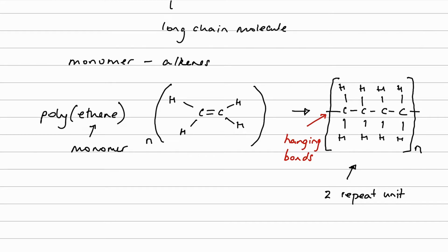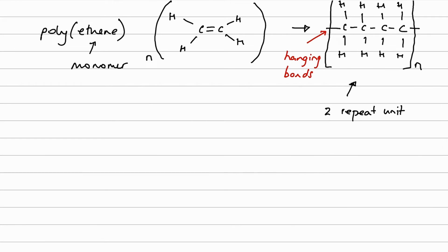If I were to draw out just a single repeat unit of polyethene or polyethene as it more correctly termed, it would look like so. So one repeat unit relates back to one monomer.